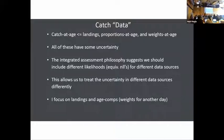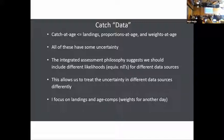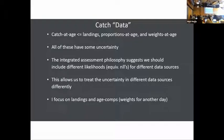Most of you are aware that catch-at-age data are derived from landings and sampling information, and the age compositions and weights of fish. All of these have some uncertainty. The integrated assessment philosophy suggests we should use different likelihoods for different data sources or data streams, and a good thing about this is that it allows us to treat the uncertainty in the data sources differently. In this talk, I'm just going to focus on my perspective on modeling landings and age comps.